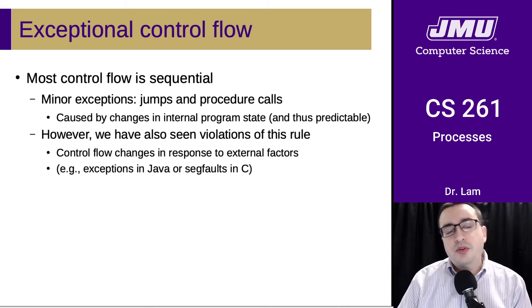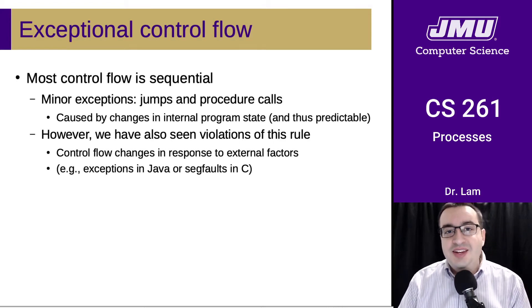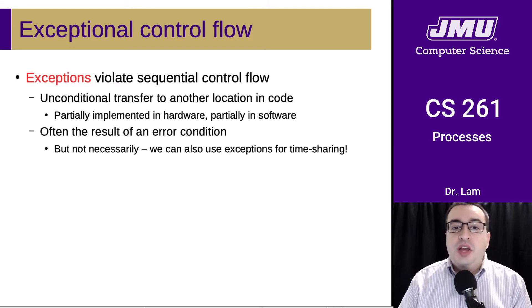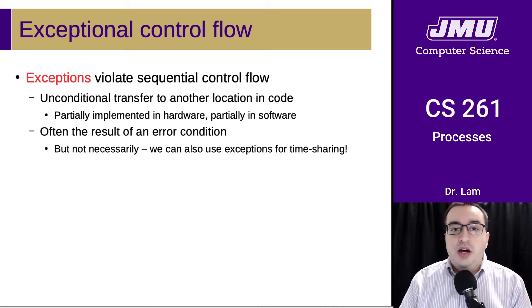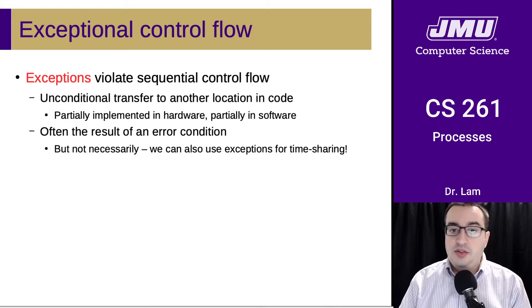However, we've also seen some violations of this rule. Here we're talking about control flow changes in response to external factors. For instance, you saw exceptions in Java and the infamous seg faults in C. Exceptions violate sequential control flow and result in an unconditional transfer to another location in the code. This is sometimes partially implemented in hardware and partially in software — a place where the operating system crosses the boundary between hardware and software.